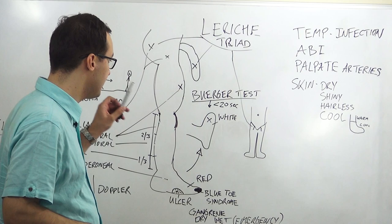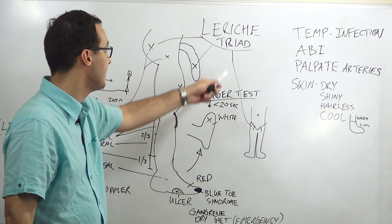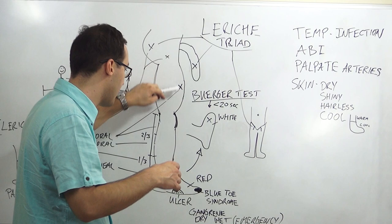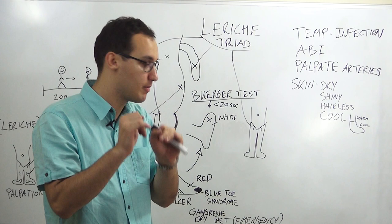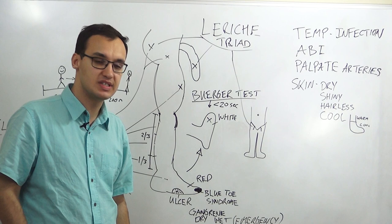The clinical approach is: first palpate the arteries, then do the Buerger test — elevate then lower the leg. Then check for the Leriche triad: claudication or pain in the legs, erectile dysfunction, and non-palpable femoral arteries.